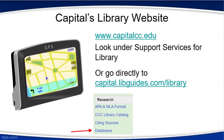Capital's library website can be accessed in one of two ways. From the college's main page, capitalcc.edu, look under Support Services for the Library link. Or you can go directly to capital.libguides.com/library. Do not put the www in front of the library's link. From the library's home page, look for the databases link under Research.